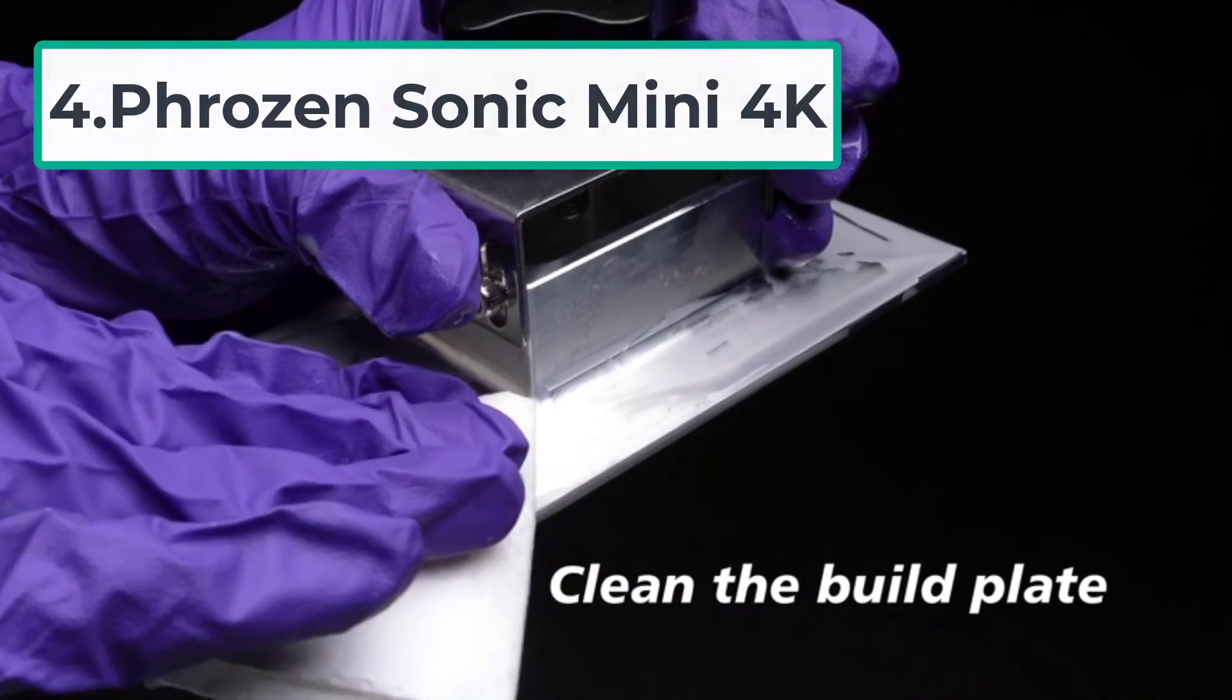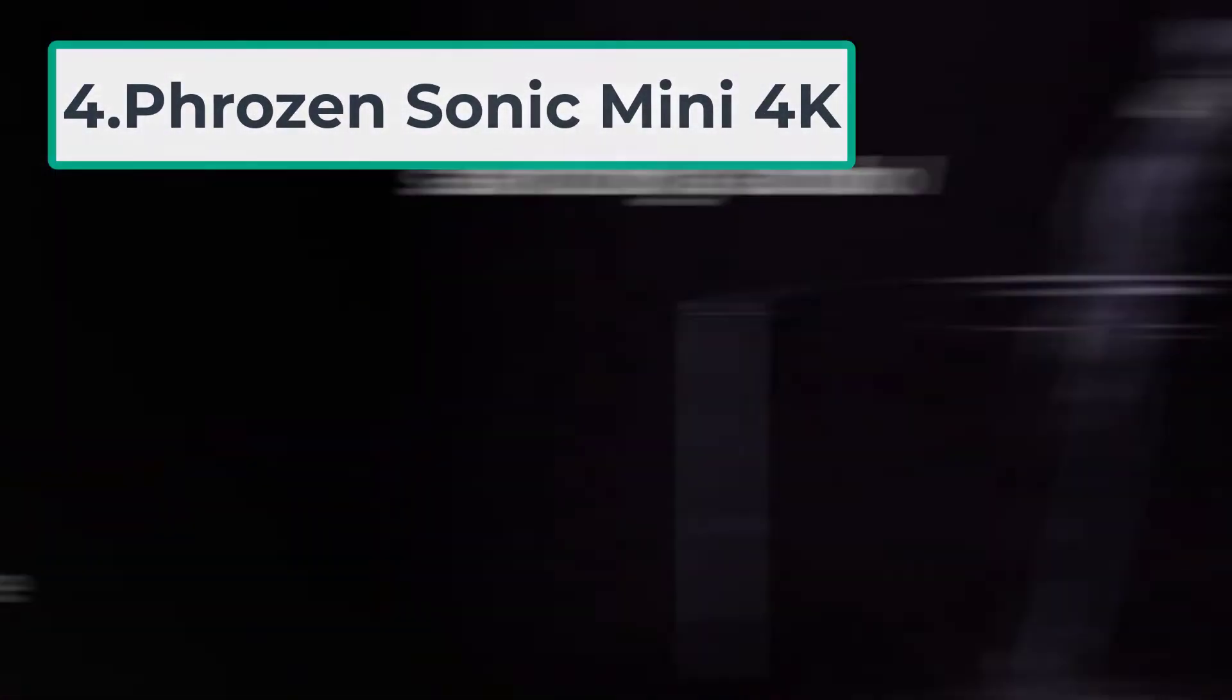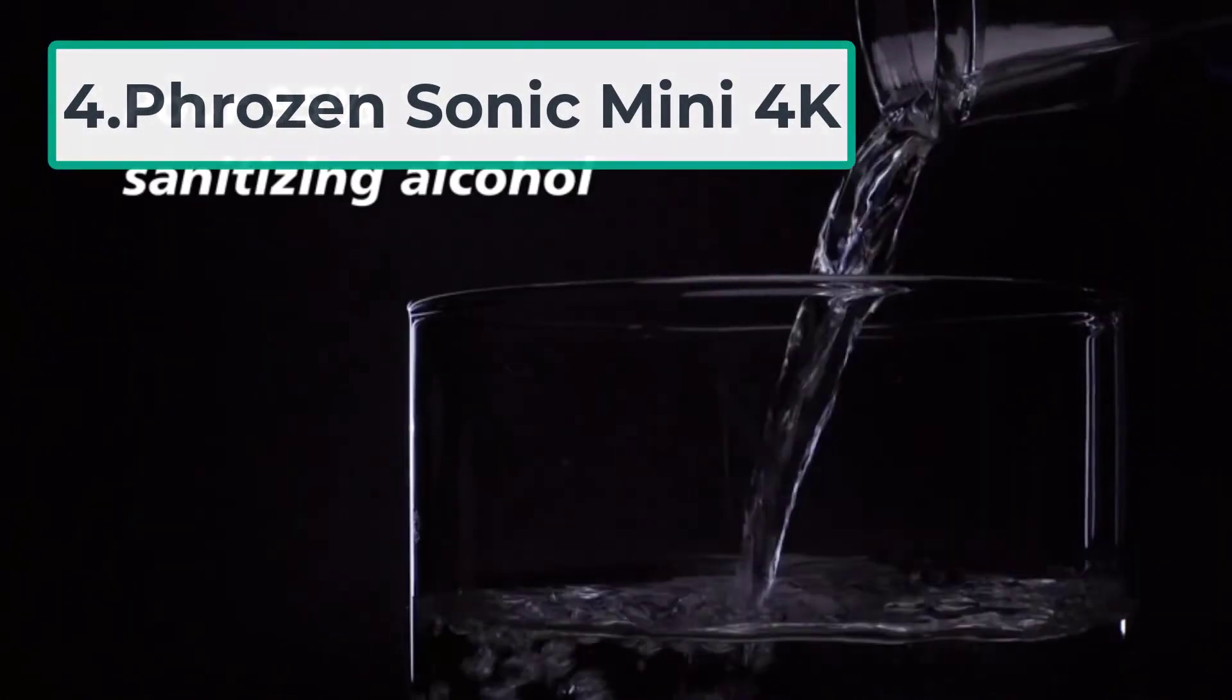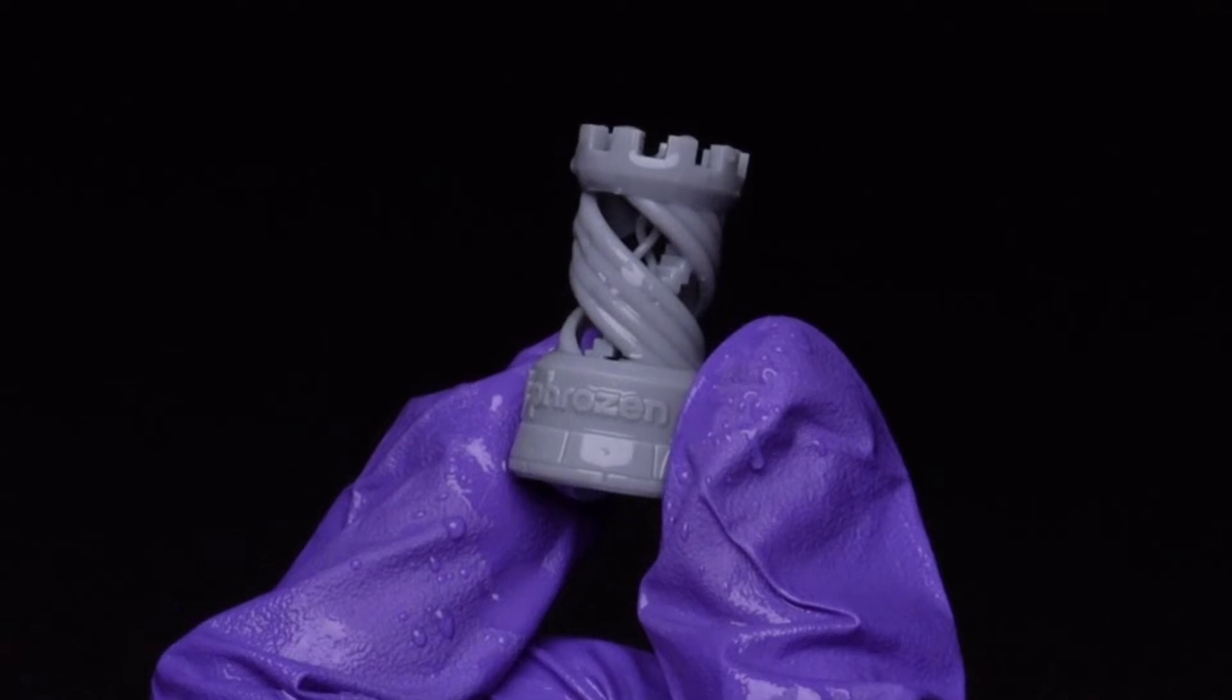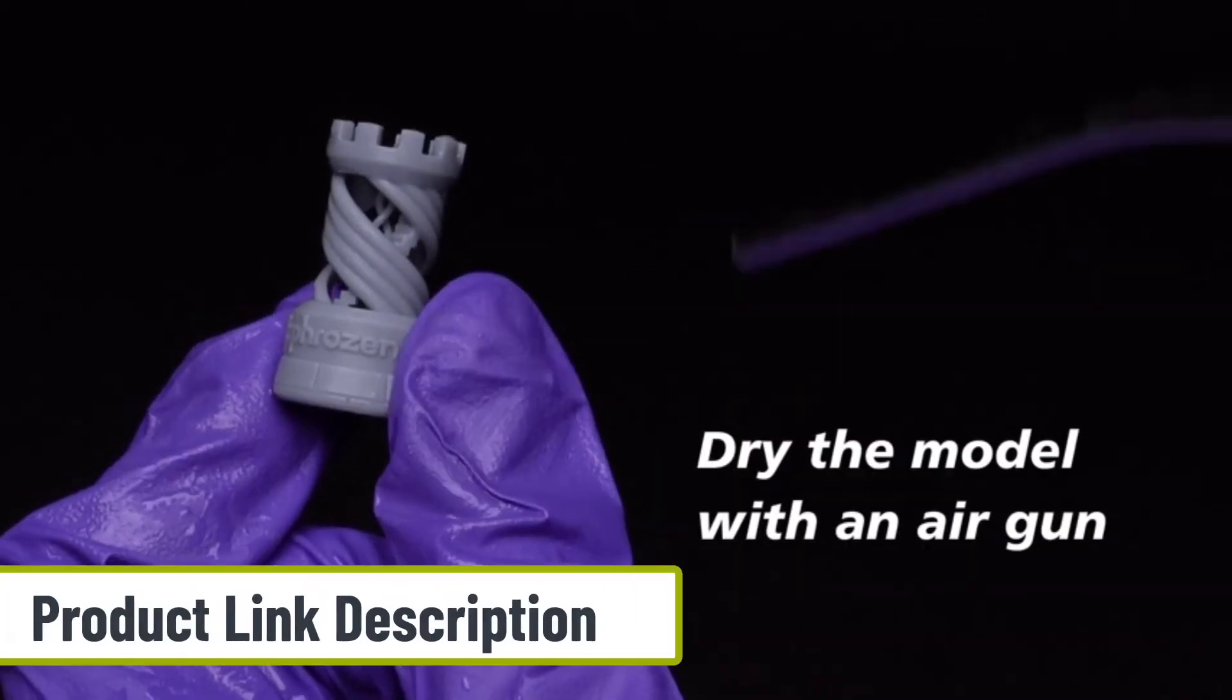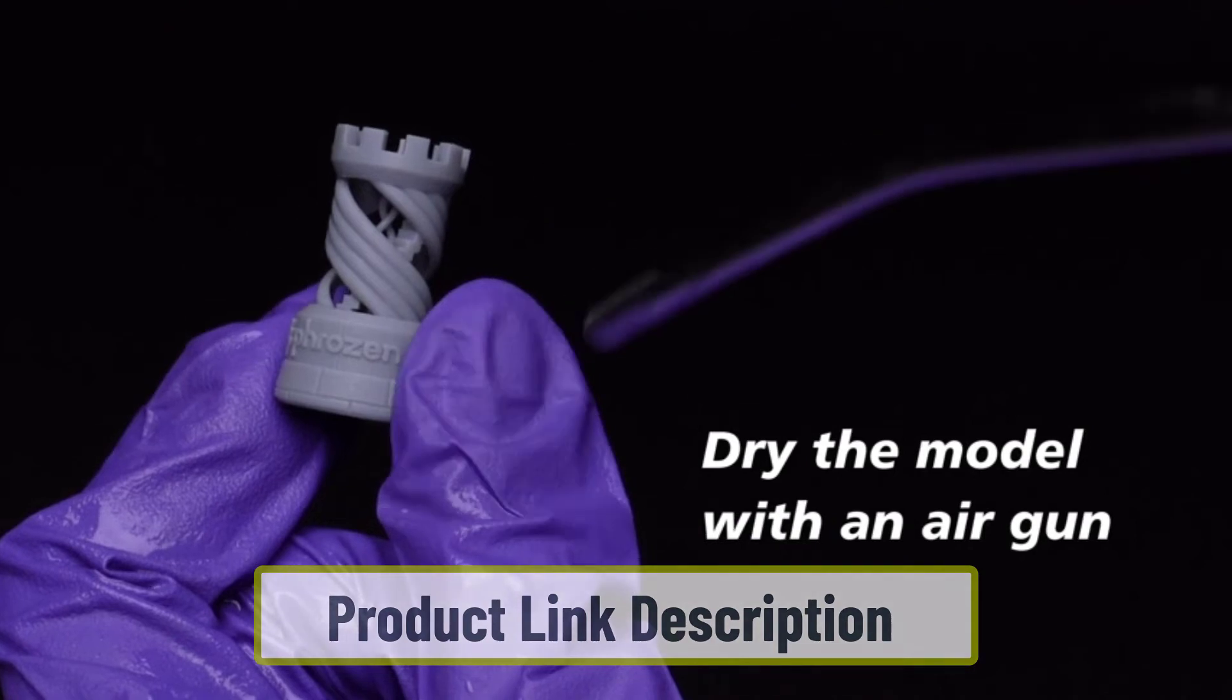At number 4, Phrozen Sonic Mini 4K. As its name suggests, the Phrozen Sonic Mini 4K boasts a 4K resolution with a 35-micron resolution. Its 3D models are incredibly detailed. A whopping 80mm per hour print speed ensures blisteringly fast print speeds with as low as 2-second layer prints.